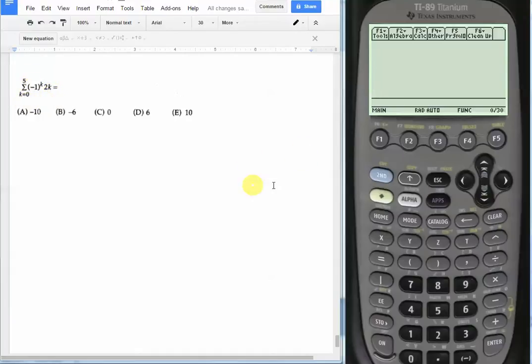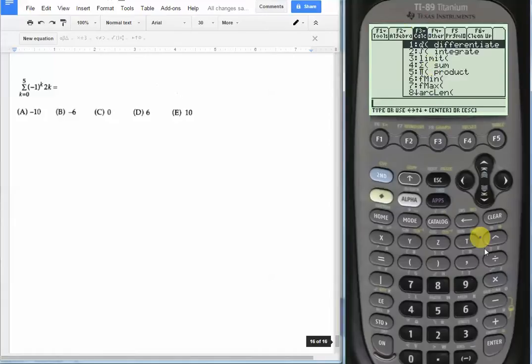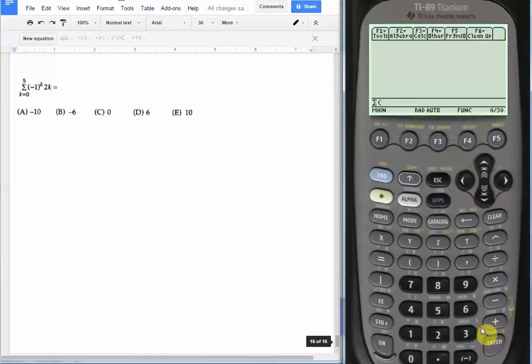And in order to get to summations, we just go to calculus, our calculus menu, which is F3. Sum is the fourth option down. Just hit Enter.